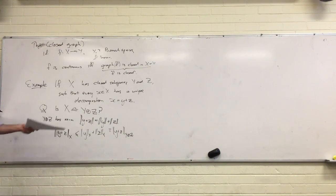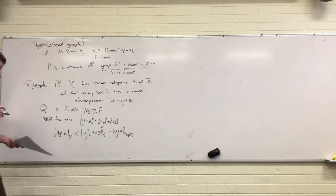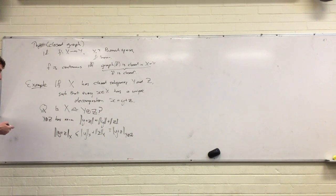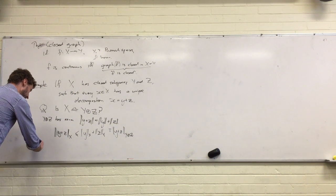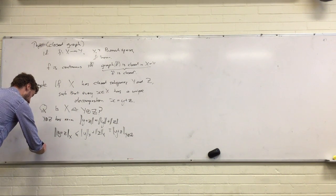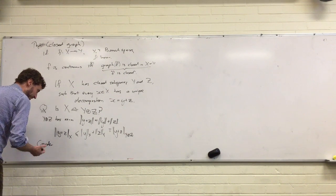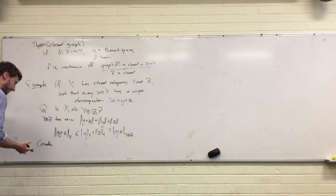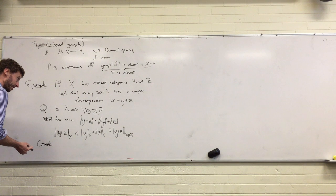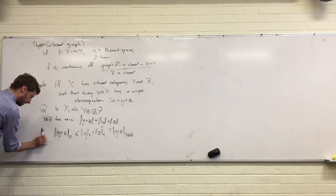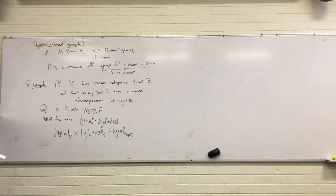But it's maybe not always obvious you have the closed graph condition, and getting the other direction is where we use the bounded inverse theorem. The point is that we can just consider the bounded inverse theorem — this is pretty similar to it. We could just invoke the bounded inverse theorem in this one.